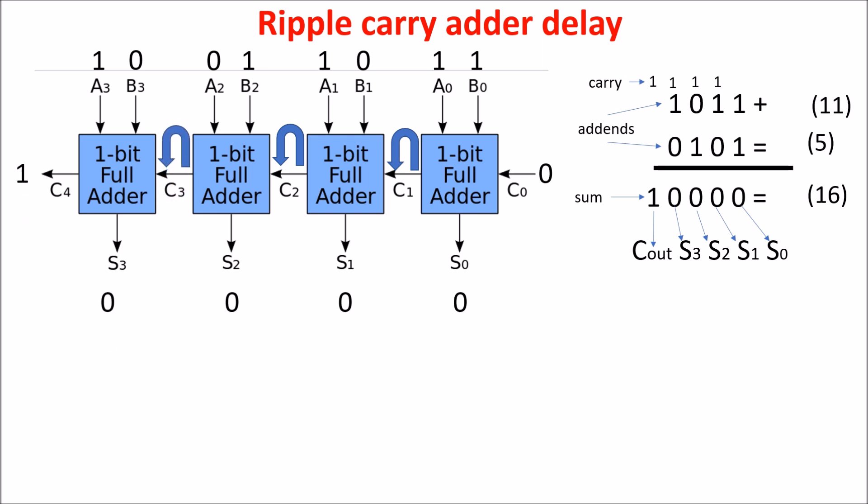So we have to wait more times for having the last sum and carry, so for having the right and stable result on the output. This time is called the delay of the adder, and it is the time the last bit needs to be stable.